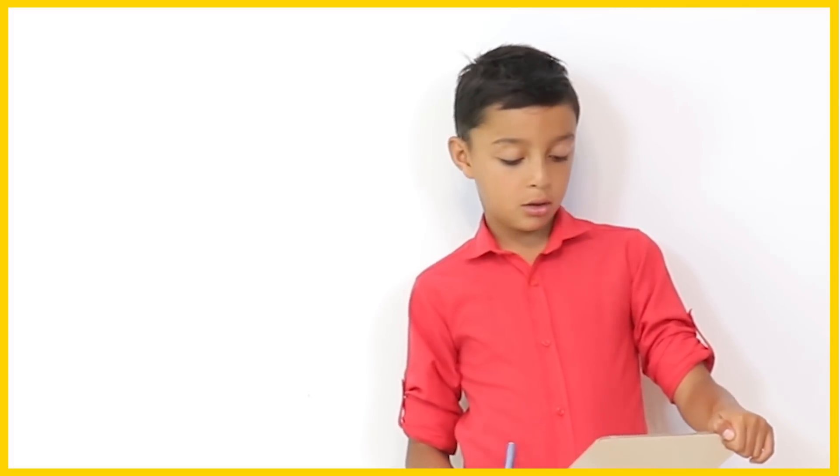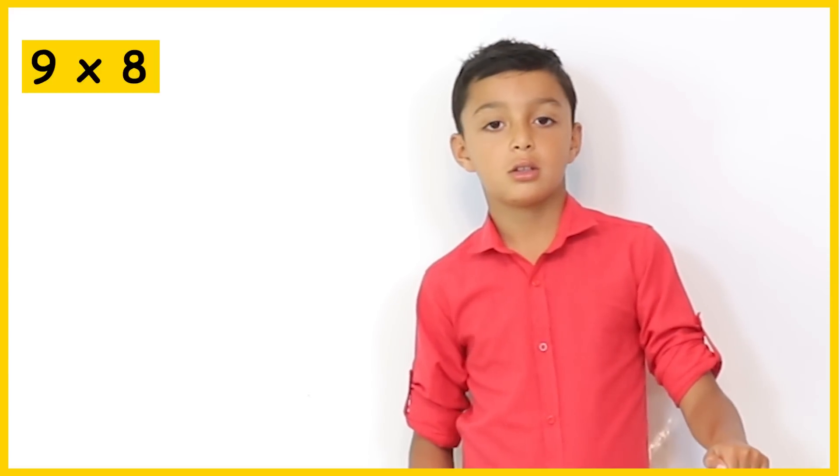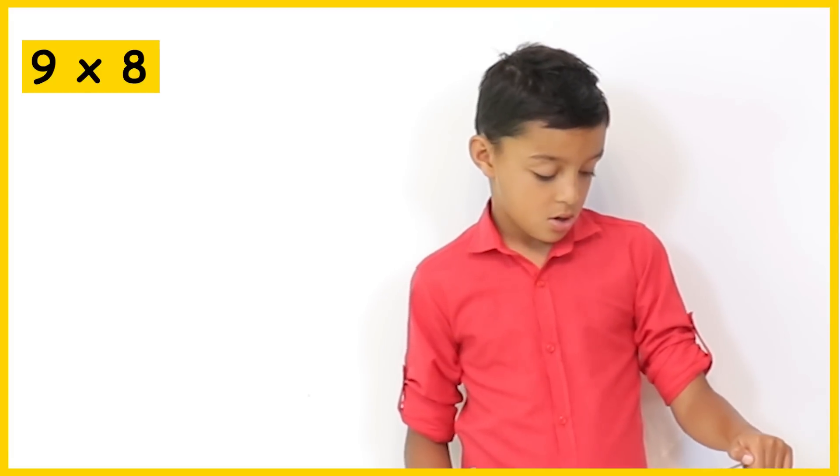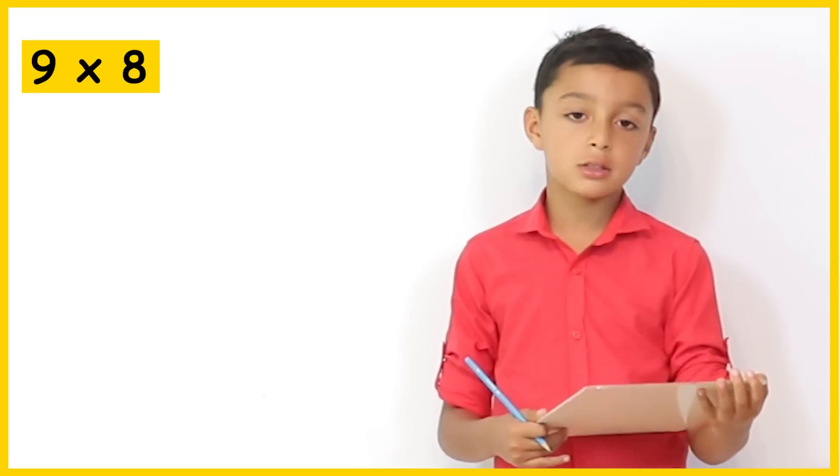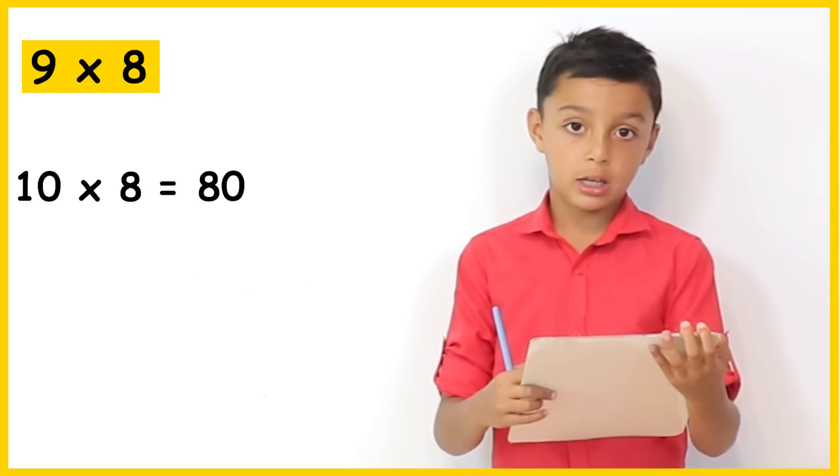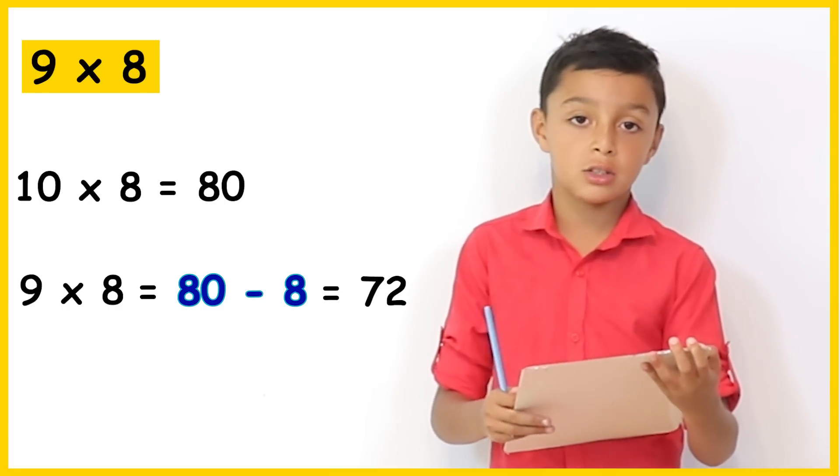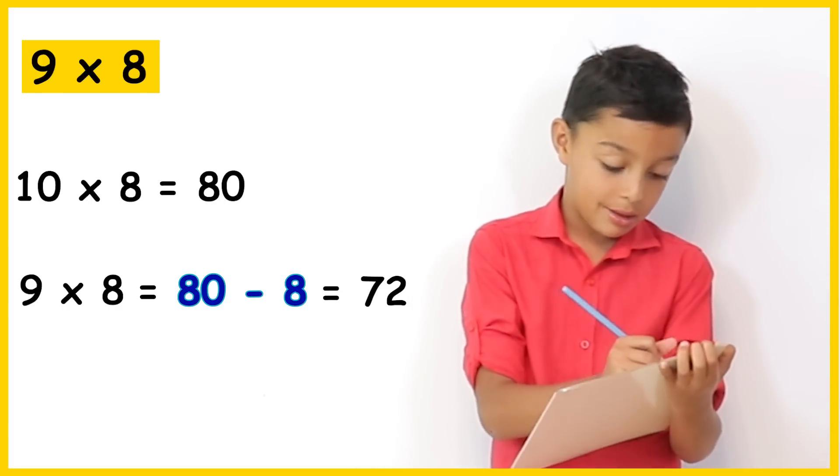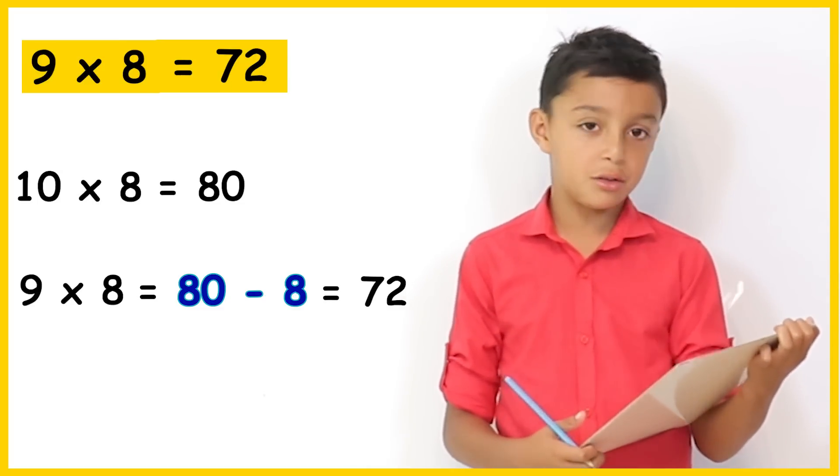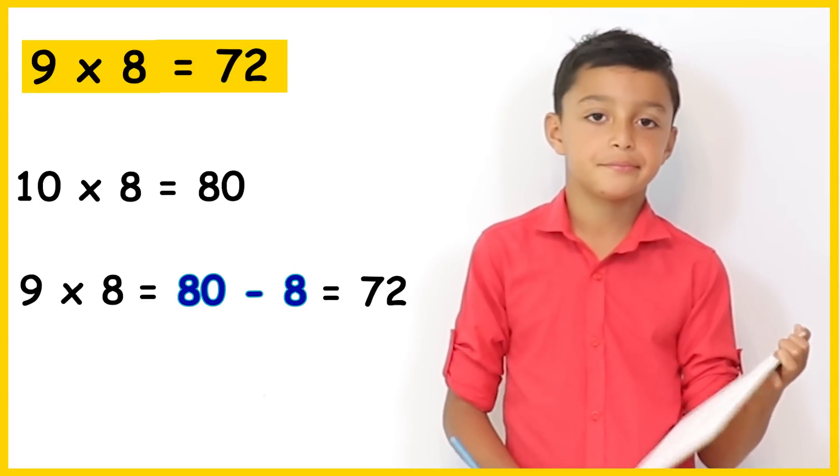And the next one is 9 times 8. 9 times 8. Now the 8 times tables can be tricky to memorize. So do you have any suggestions on how we can figure this out? So we can do 10 times 8 which is 80. Good. And then we can take away 8. So 80 take away 8 is 72. Very good. So that means 9 times 8 is 72. Good. And how did you know 10 times 8 was 80? Because you can just add a 0 on the 8. So that was making it a lot easier for you. Brilliant.